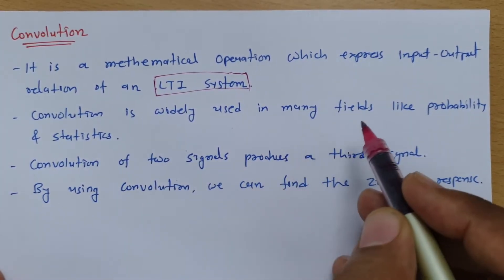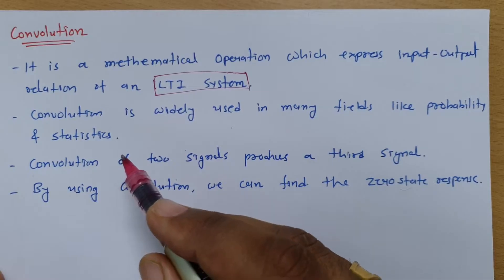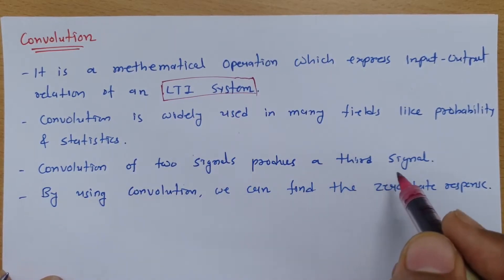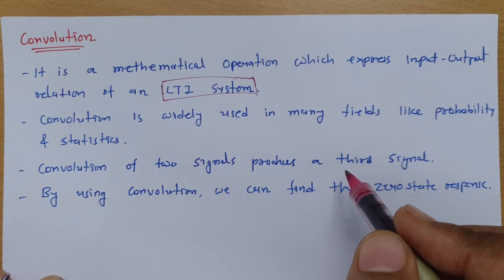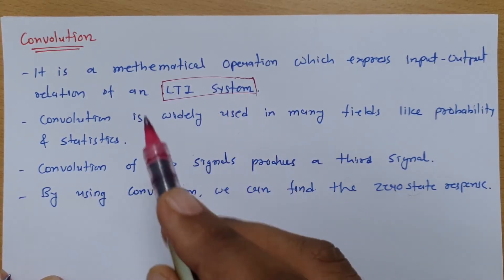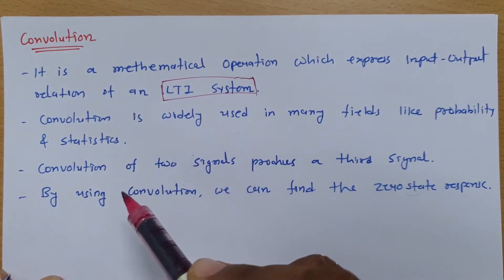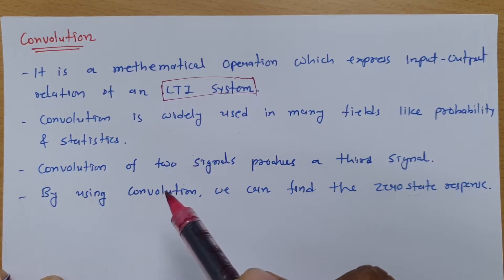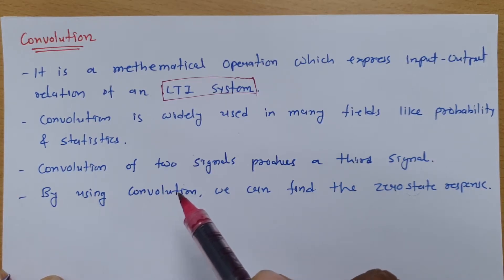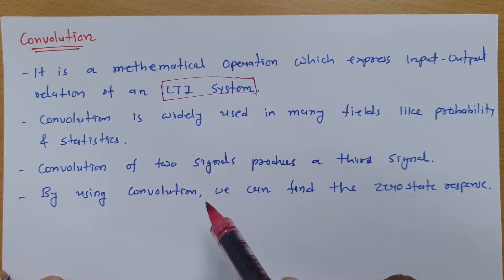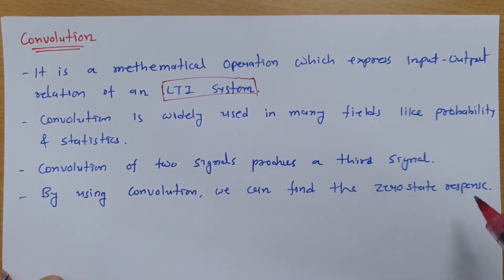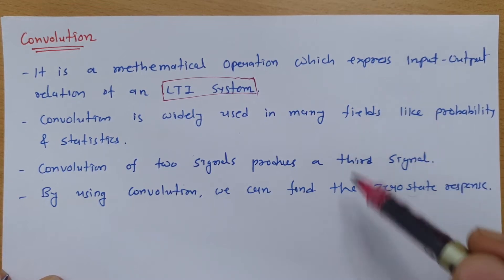Convolution is widely used in many fields like probability and statistics. Convolution of two signals produces a third signal. When you do convolution of two continuous-time signals it generates another continuous-time signal, and if you operate with discrete signals, convolution generates a discrete signal. In this lecture series you will find different cases of convolution for continuous time as well as discrete time, with examples. By using convolution we can find the zero-state response.